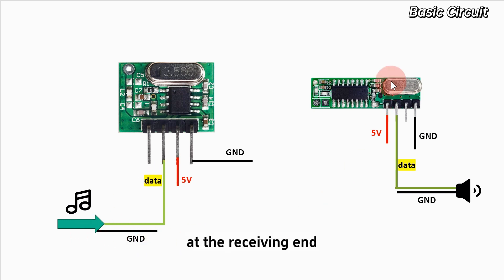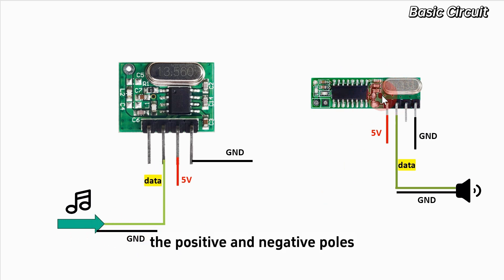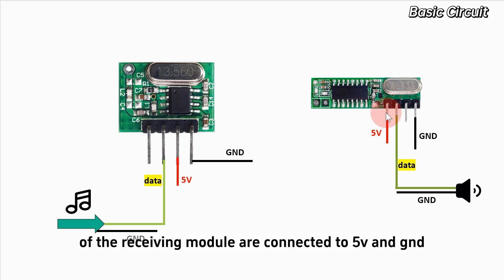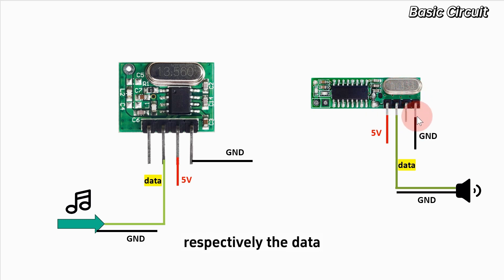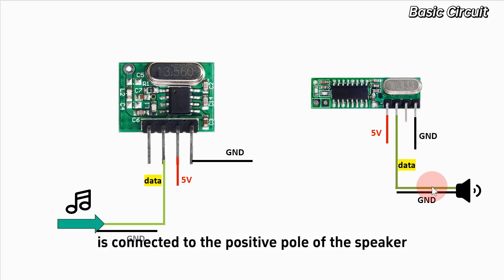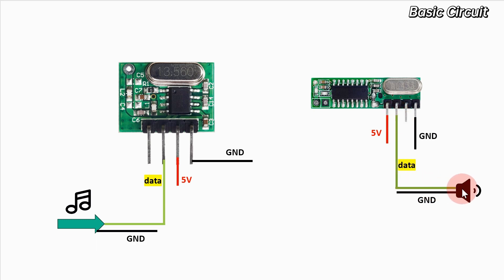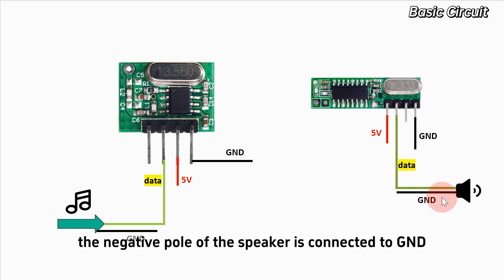At the receiving end, the positive and negative poles of the receiving module are connected to 5V and GND respectively. The data pin of the receiving module is connected to the positive pole of the speaker, and the negative pole of the speaker is connected to GND.